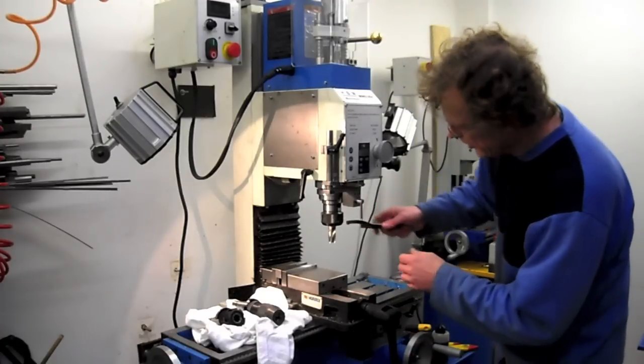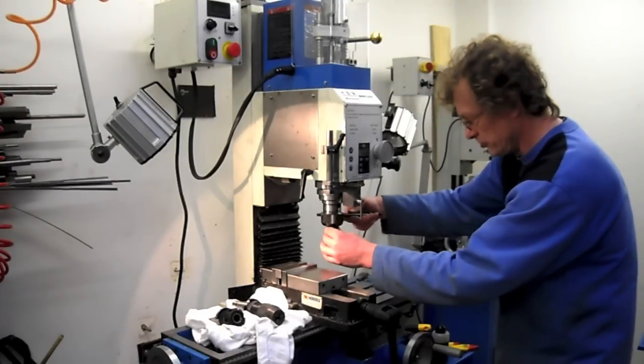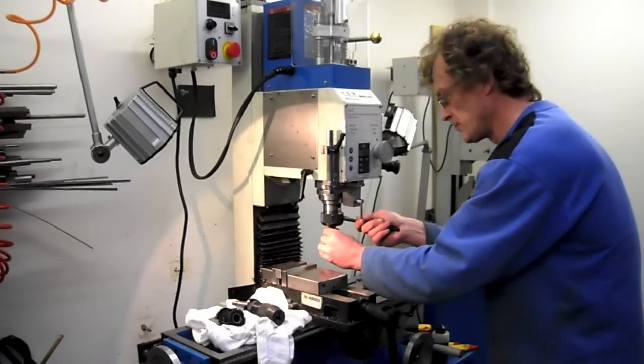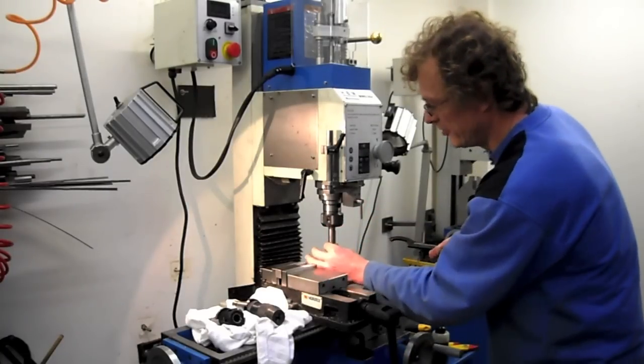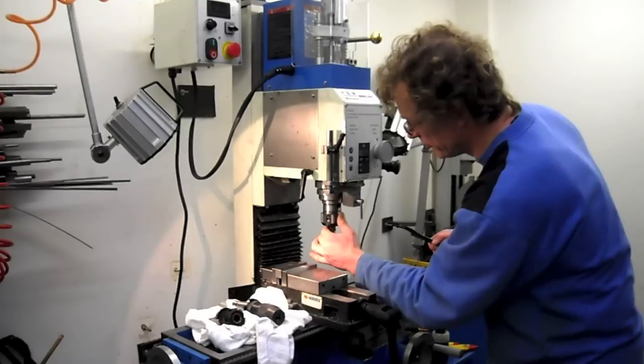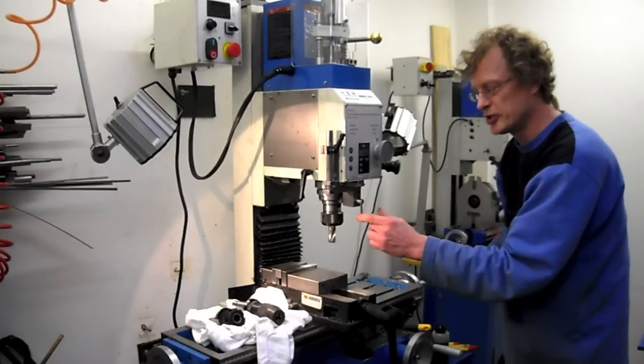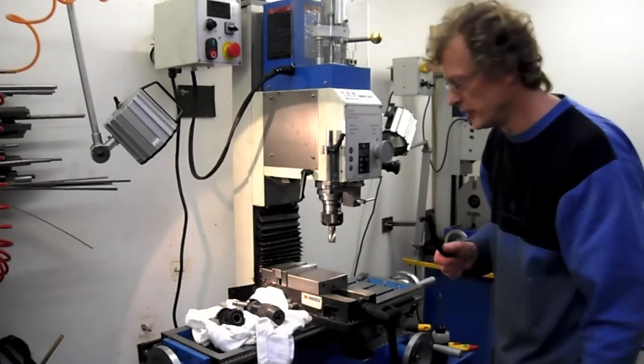Just with one hand I can easily release the collar and it leaves me one hand free to make sure it doesn't drop on the table. So tighten that again, and when I'm done, all I do is - and it's released.